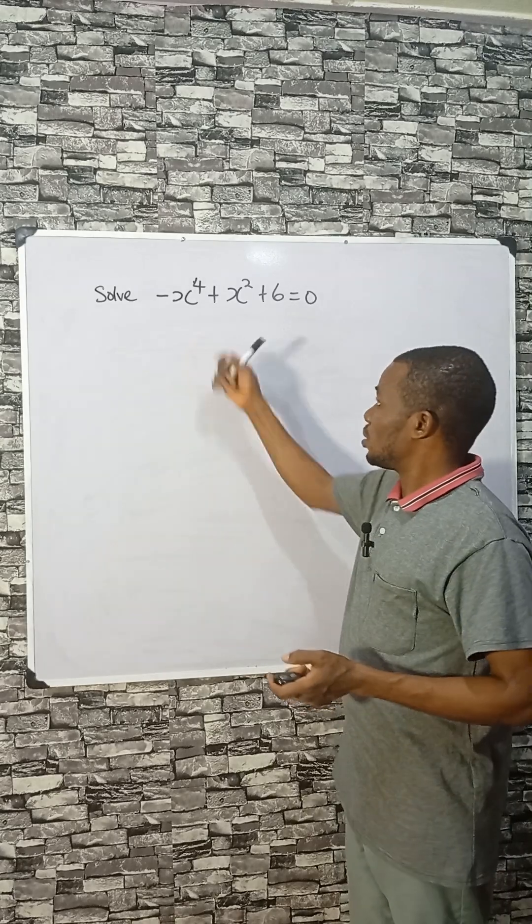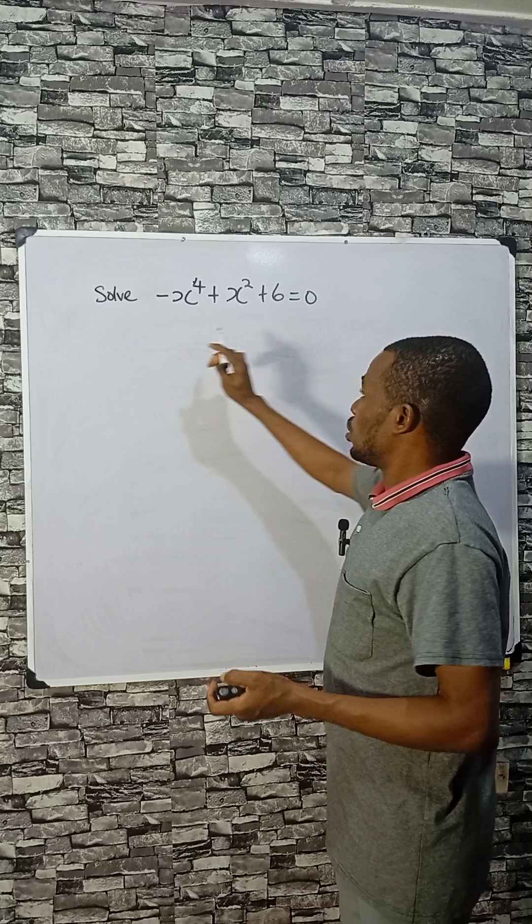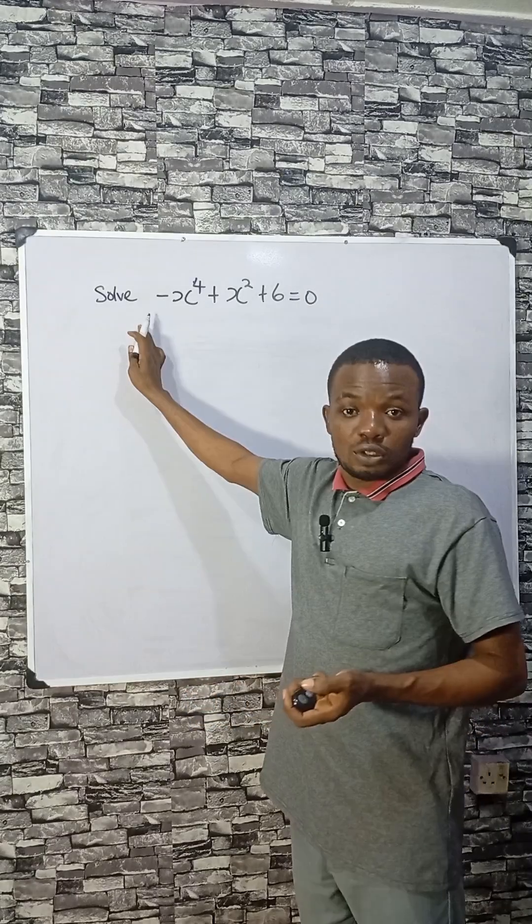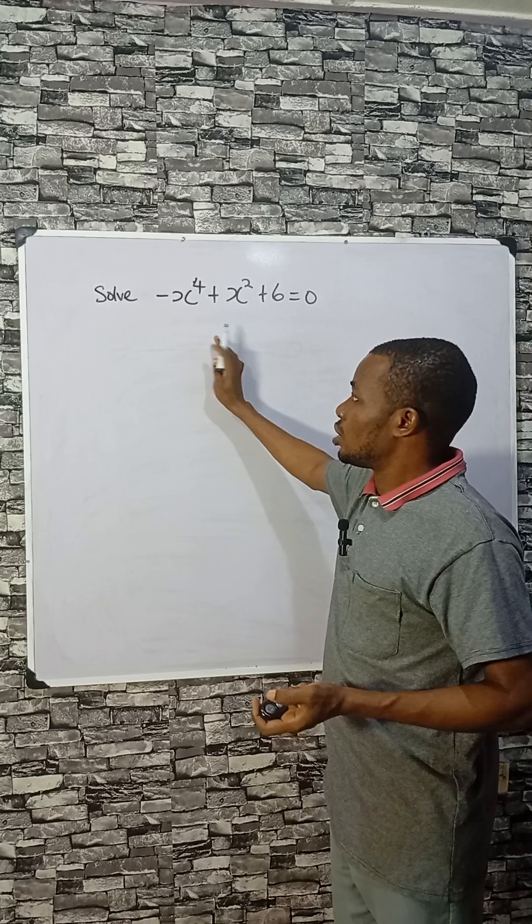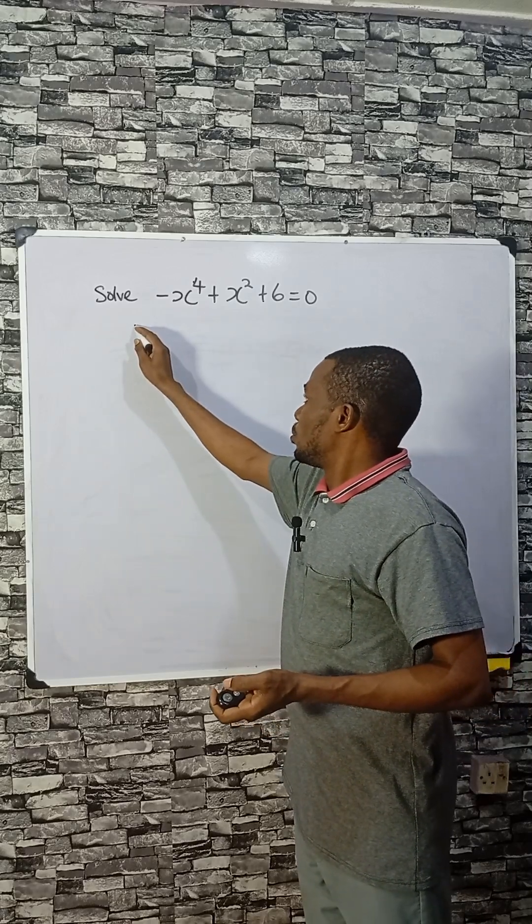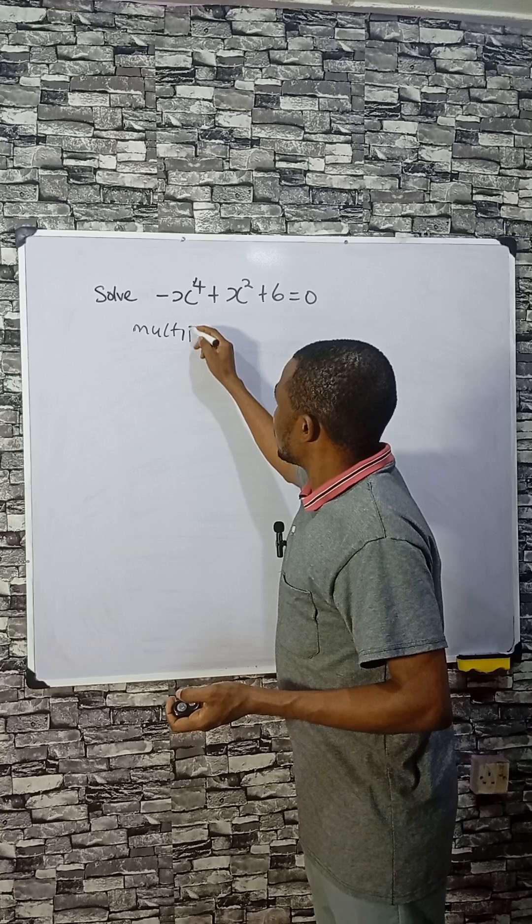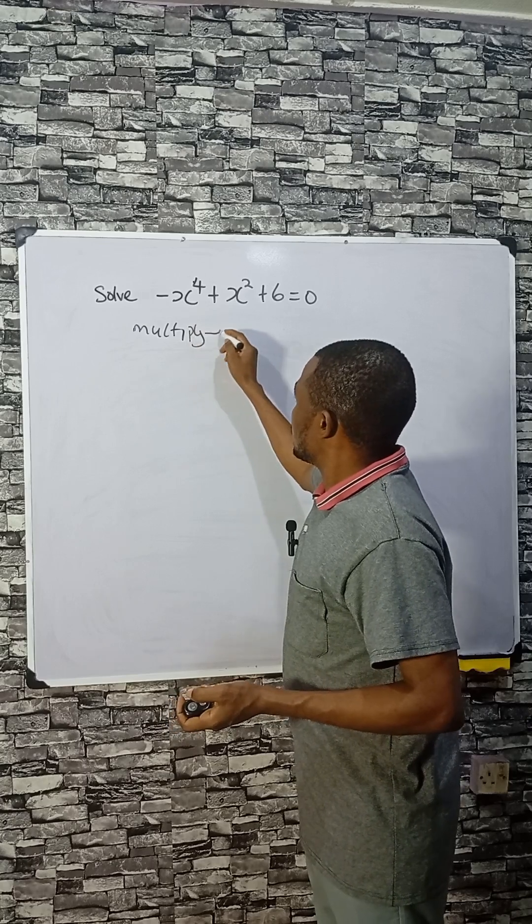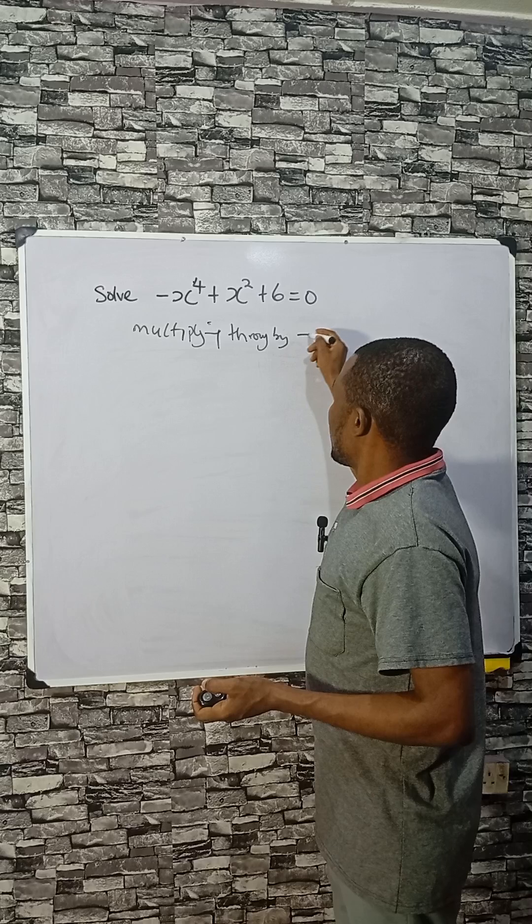Let's solve this. First, let's multiply through by minus one. You know that when you multiply or divide by minus one, the signs here will change. So, multiplying through by minus one...